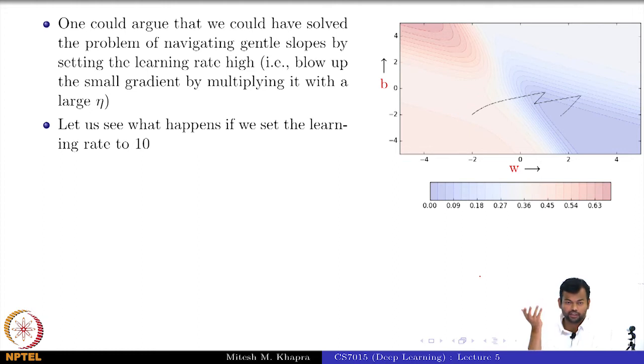You want an adaptive eta that somehow figures out that I am on a gentle slope so I should move fast, and I am now on a very steep slope so I should move slow. Having this one eta is not working for every point on the error surface, right?